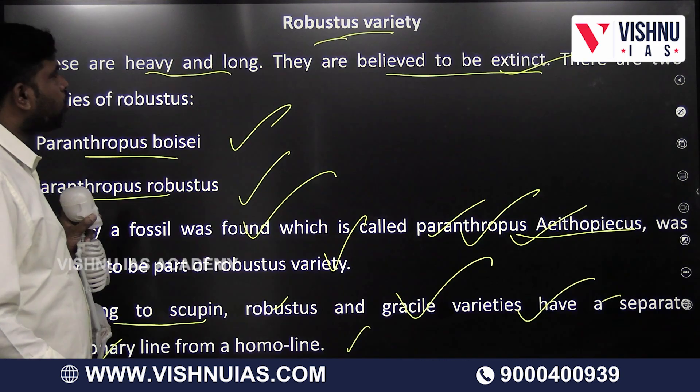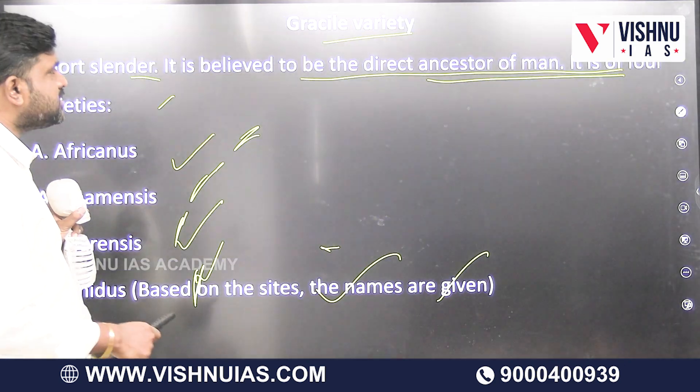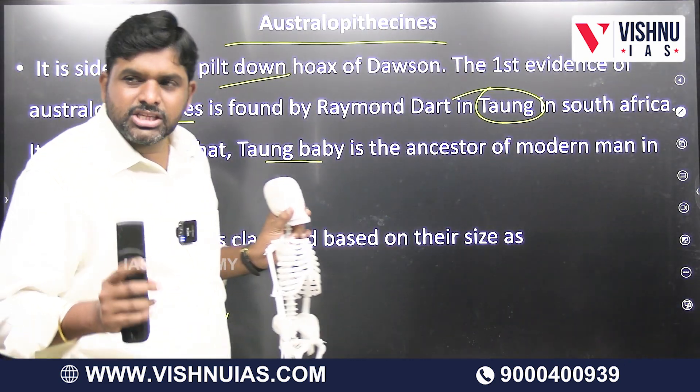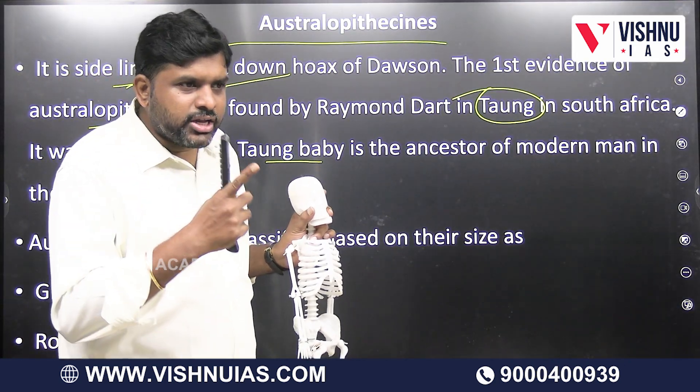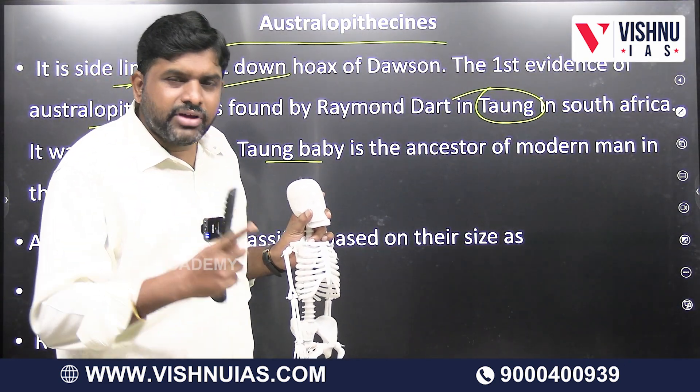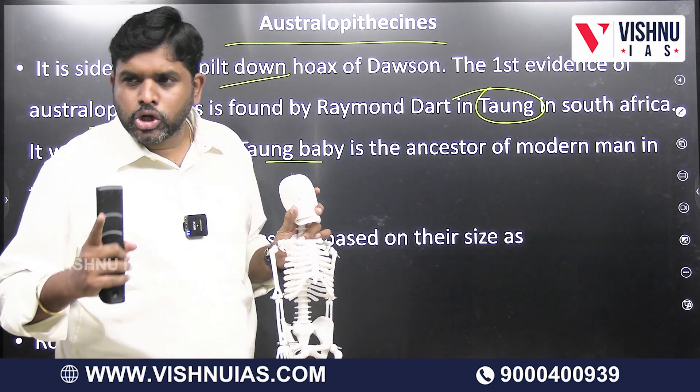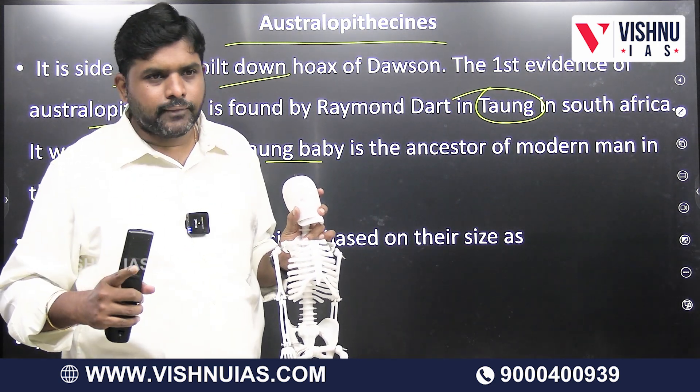We are discussing about Australopithecines. Australopithecines are of two varieties: one is the Gracile variety, and the other is the Robustus variety.